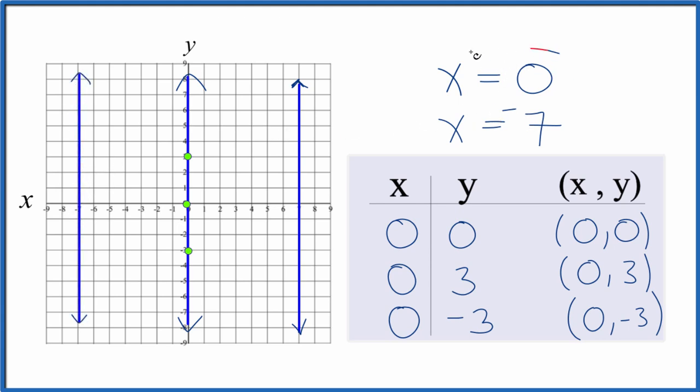But in this case, since we had x equals 0, that was just here. At x equals 0, we draw our vertical line on our graph.